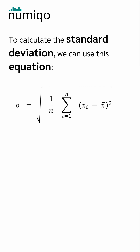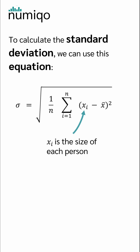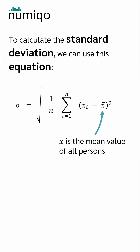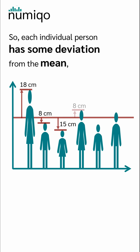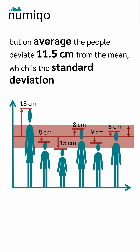To calculate the standard deviation, we can use this equation. Sigma is the standard deviation. N is the number of persons. Xi is the size of each person. And X-bar is the mean value of all persons. So each individual person has some deviation from the mean, but on average the people deviate 11.5 cm from the mean, which is the standard deviation.